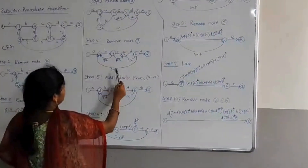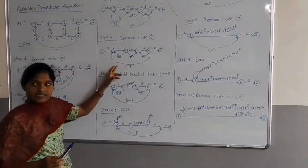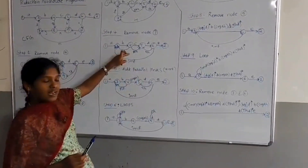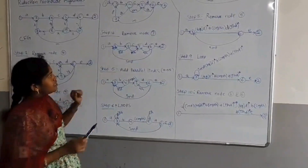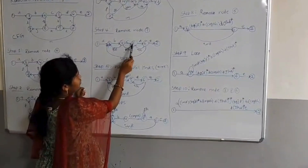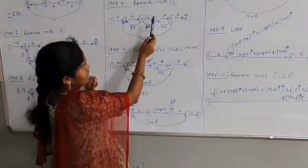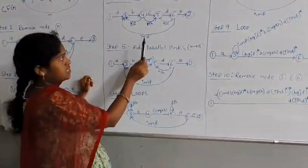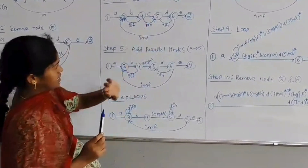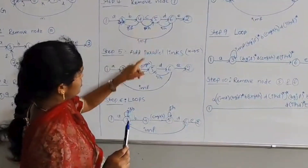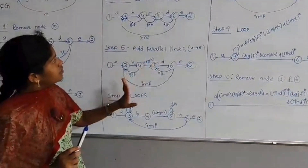Now we have to check whether there are parallel links. If there are parallel links, we have to add them. Checking here, from 4 to 5 there are parallel links: one with weight C and another with weight GKH. Since these are in parallel, we have to add C and GKH. By adding these two, we will get C + GKH as the link weight.